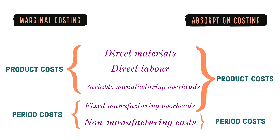Now let's take a look at the differences and similarities between the two methods. Both absorption costing and marginal costing take into consideration direct materials cost, direct labor cost and variable manufacturing overheads as part of product costs. Also, both absorption and marginal costing treat non-manufacturing costs as period costs. So these are the two similarities.